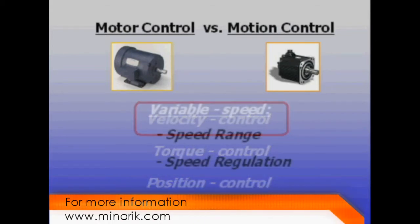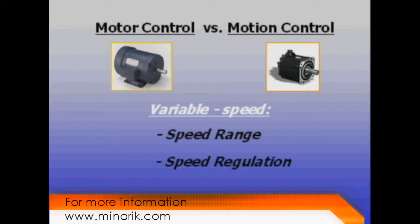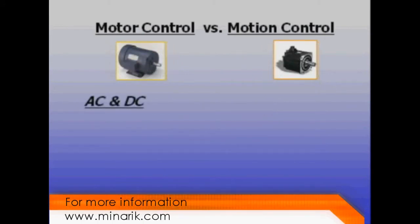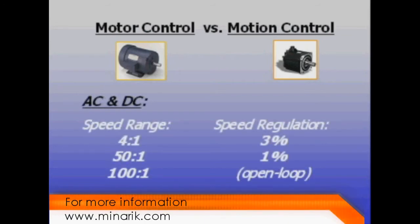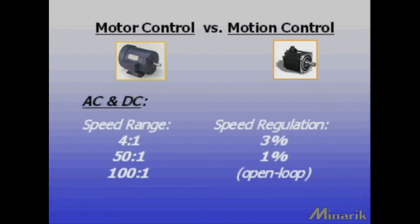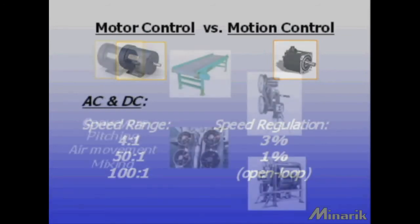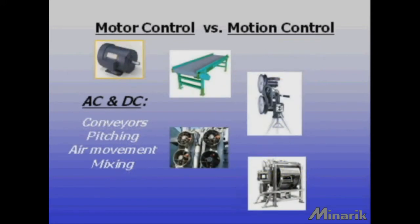Speed range and speed regulation are the key performance measures. AC and DC motors and drives work well for applications under 50 or 100 to 1 speed range and speed regulation of 3 to 1% open loop. Examples include conveyors, pitching machines, air movement, and mixing.